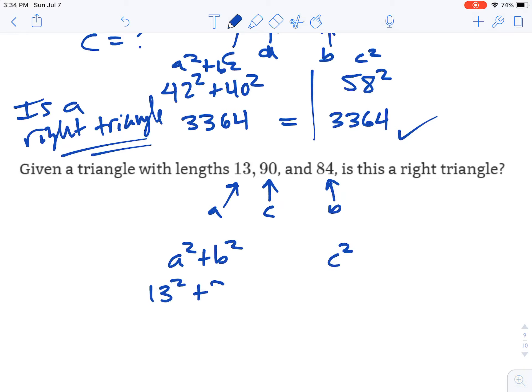So 13 squared plus 84 squared. Does that equal 90 squared? So 13 squared plus 84 squared is 7,225. 90 squared, I know, is not going to be that. Because 9 times 9 is 81. So an extra 0 on it makes it 8,100, which is not equal.